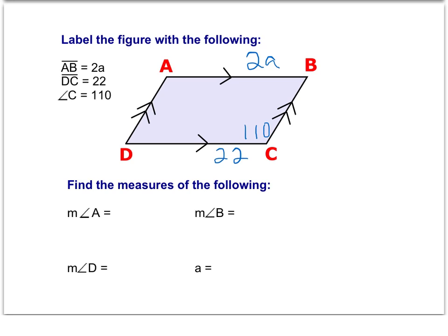Let's start with the angles. If we know one angle in a parallelogram, we can use that information to find the other three missing angles. We know that opposite angles, which would be angle A and angle C, are congruent. And we know that consecutive angles, which are any two angles that are next to each other, are supplementary, so they're going to add up to 180 degrees.